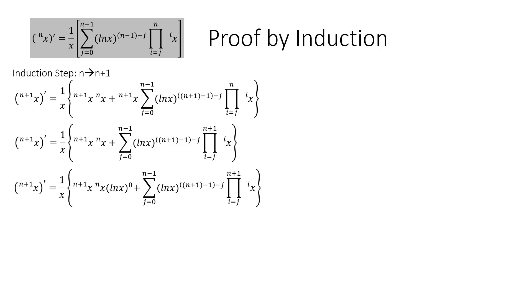Next, we multiply the first term in curly brackets by the 0th power of the natural log of x. Which is just multiplying by 1, so it's legal. The last step is interesting, so let's do this on the side.